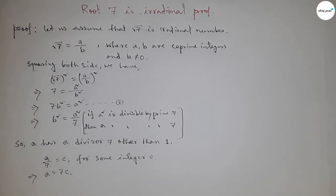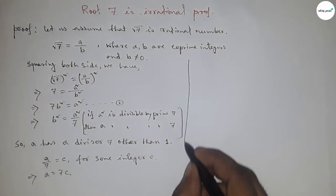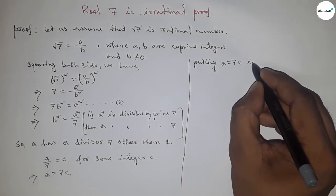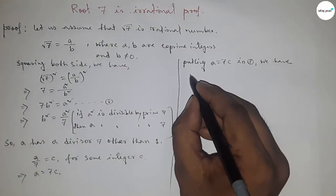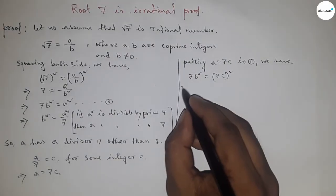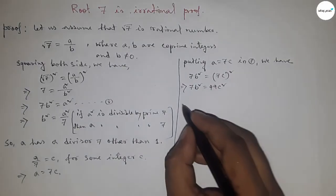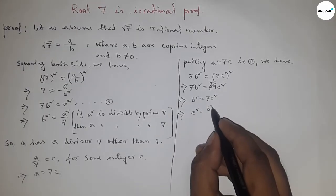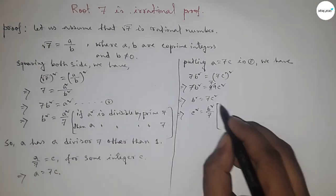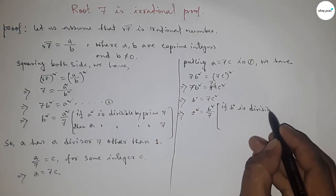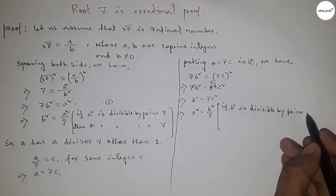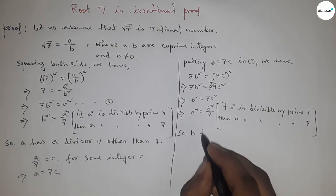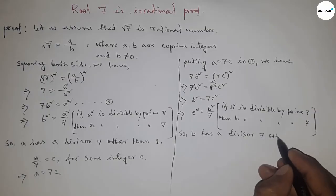Now putting a = 7c into relation 1: 7b² = (7c)² = 49c². Cancelling the common factor 7, we get b² = 7c², which gives b²/7 = c². This is similar to before, so if b² is divisible by a prime 7, then b is also divisible by 7. So b also has a divisor 7 other than 1.